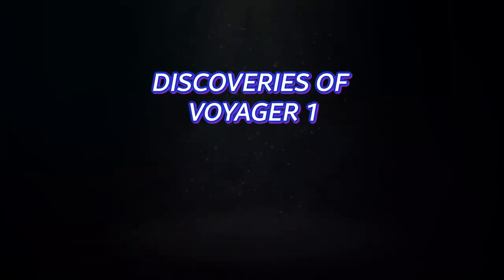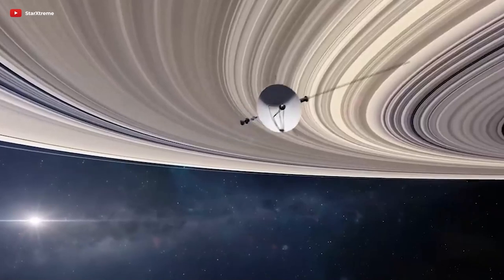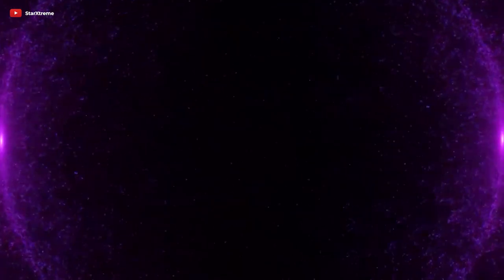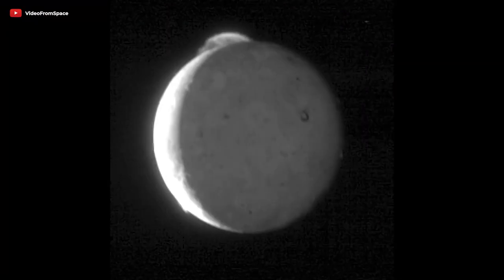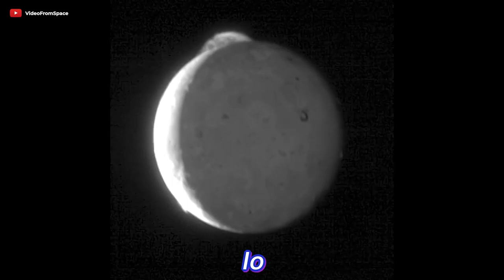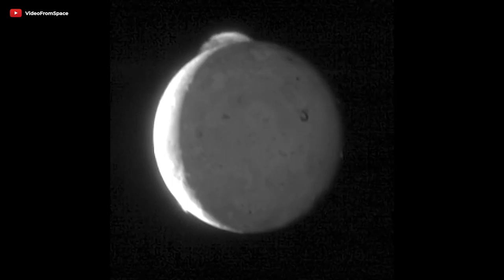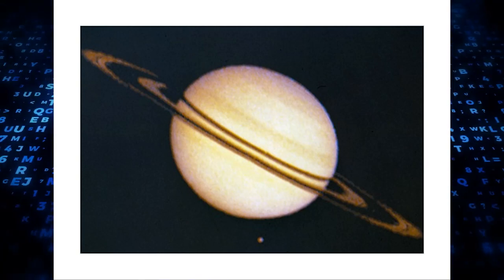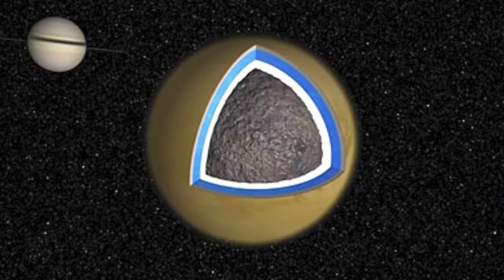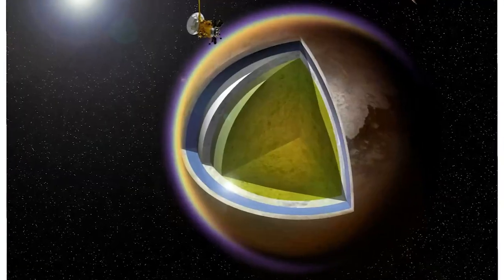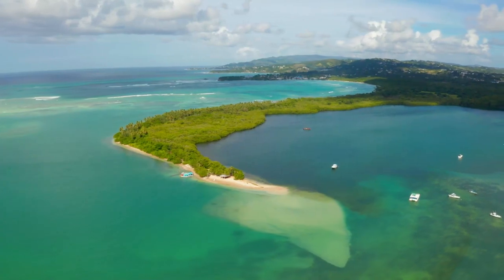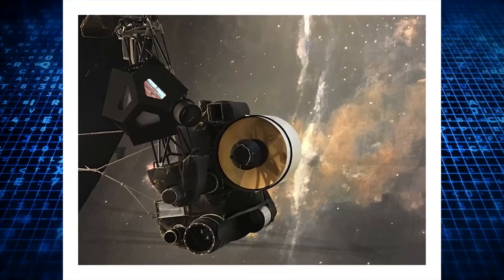Discoveries of Voyager 1. Voyager 1 made a number of groundbreaking findings that have contributed to our improved comprehension of the cosmos when it was traveling beyond the outer reaches of the solar system. The discovery of active volcanoes on Jupiter's moon Io, which was captured in stunning images taken by the probe's cameras, the discovery of a massive ring system around Saturn which was previously unknown, and the discovery of a global ocean on Saturn's moon Titan, which is believed to contain more liquid than all of Earth's oceans combined, are some of the most significant discoveries.